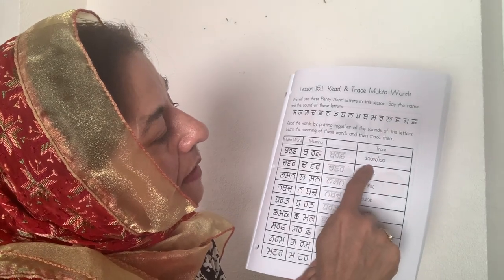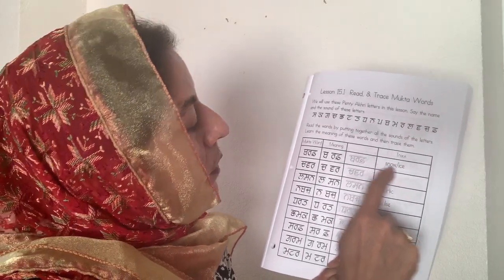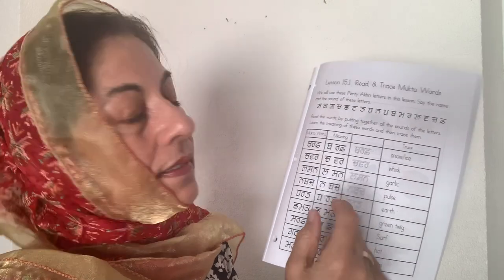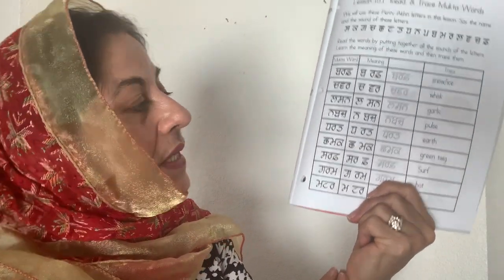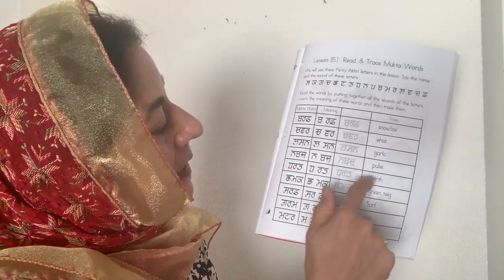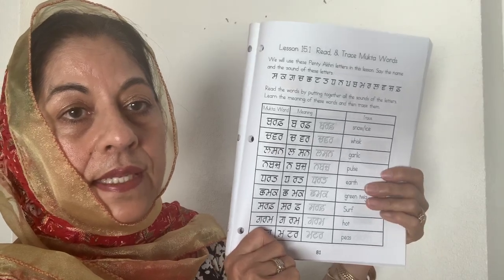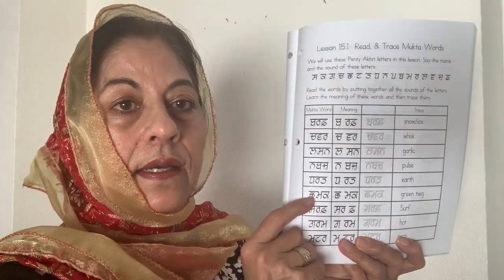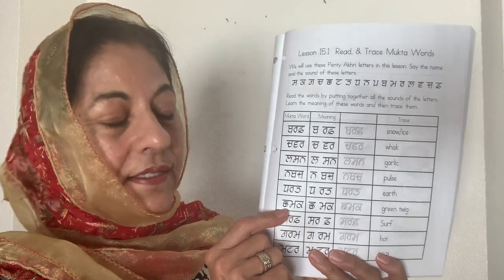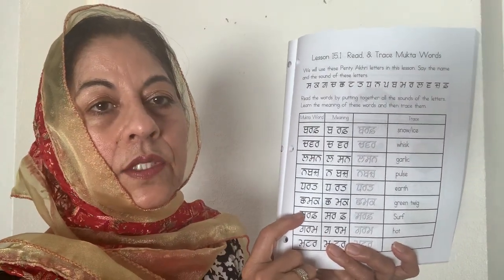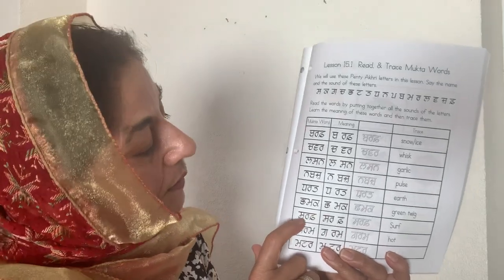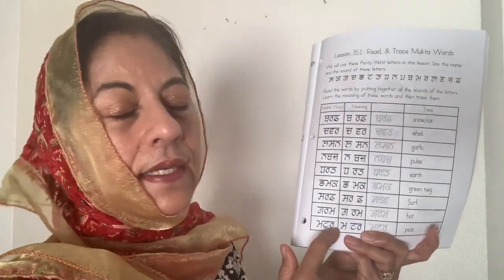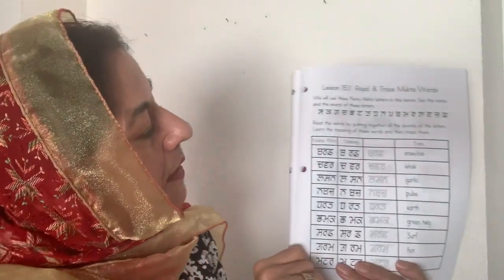You will trace over them. What do they mean? Baraf means snow or ice. Chavar is a whisk. Lassan is garlic. Nabaz is pulse — the doctor checks your pulse when you go there; they want to see your heartbeat. Tarath is earth; we can say Tarthi, or Zameen, or Tarath. Chamak is a twig — a small twig with some green leaves or flowers. Sarf is a detergent. Garam is warm or hot. And Matar is peas.